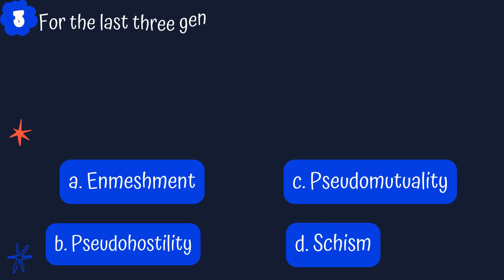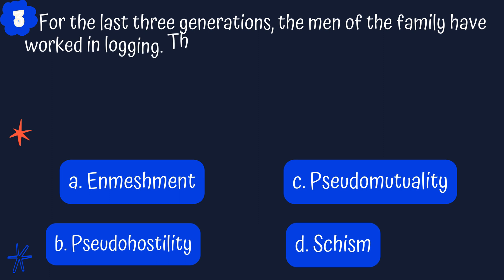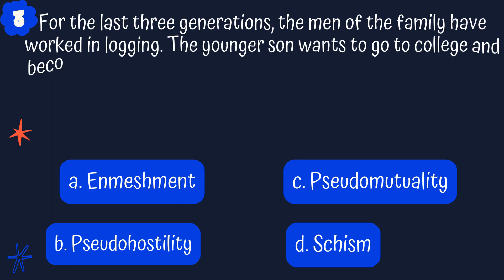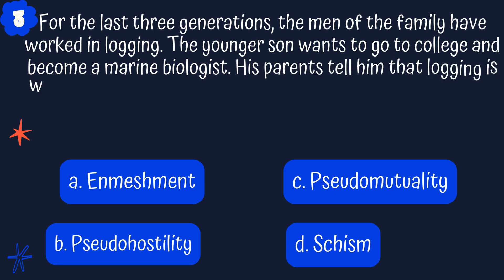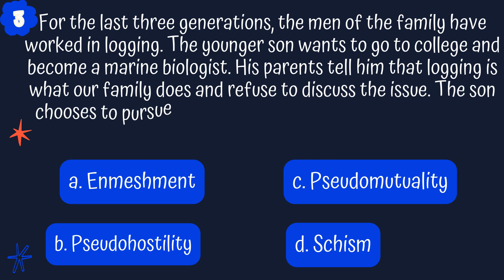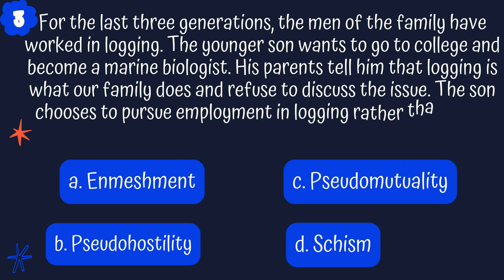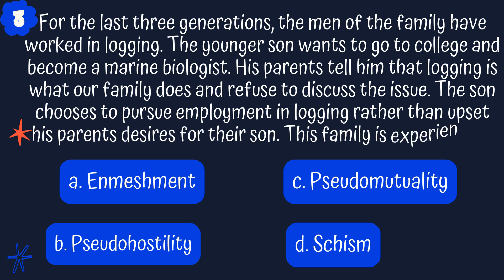Question 3. For the last three generations, the men in the family have worked in logging. The younger son wants to go to college and become a marine biologist. His parents tell him that logging is what our family does and refuses to discuss the issue. The son chooses to pursue employment in logging rather than upset his parents' desire for their son. This family is experiencing what? A. Enmeshment, B. Pseudo-hostility, C. Pseudo-mutuality, D. Schism.